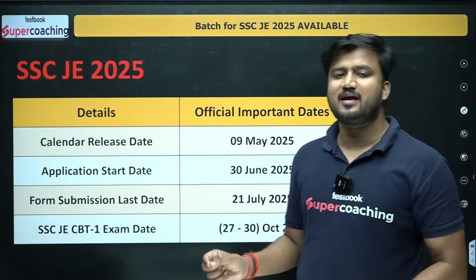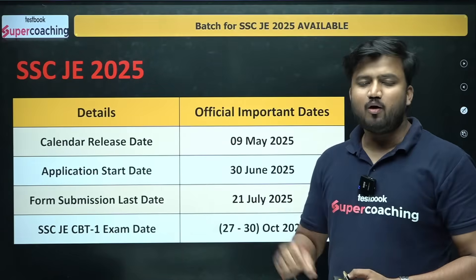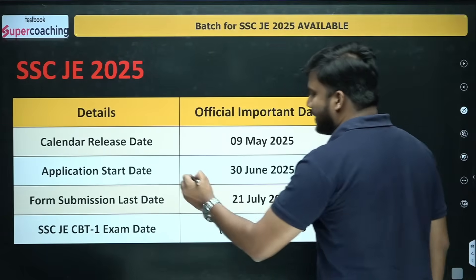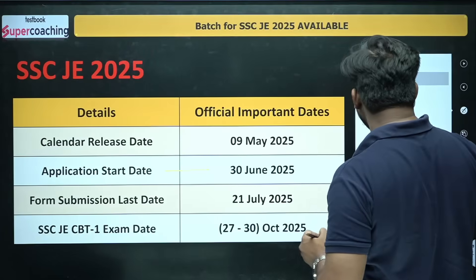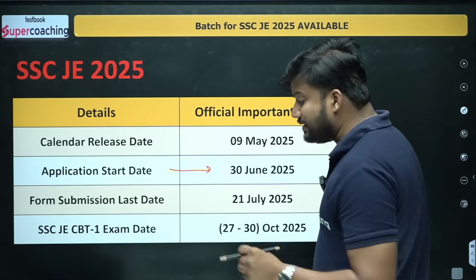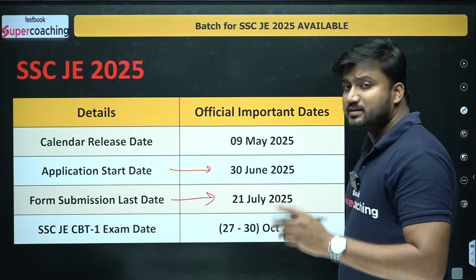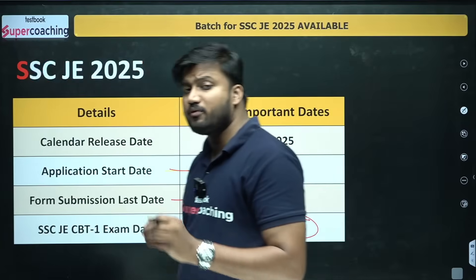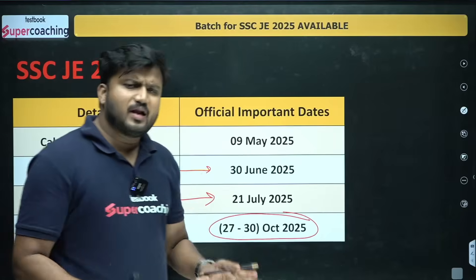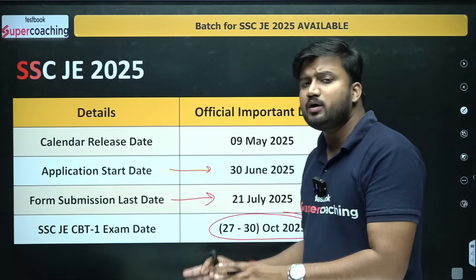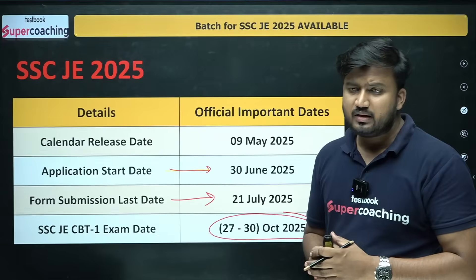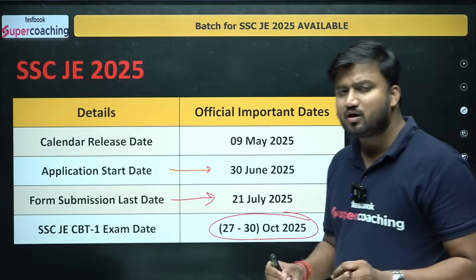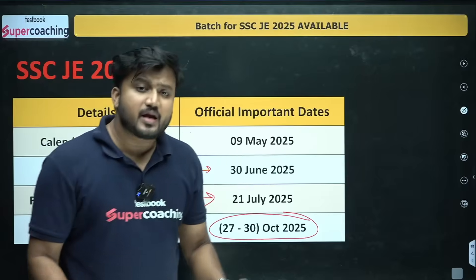SSC has released its official calendar for the Junior Engineer post of 2025. Some important dates are: you can apply from 30th of June 2025 till 21st of July, and the first phase of examination will be between 27th to 30th of October 2025. We can clearly see that there is limited time available for preparation of this examination.